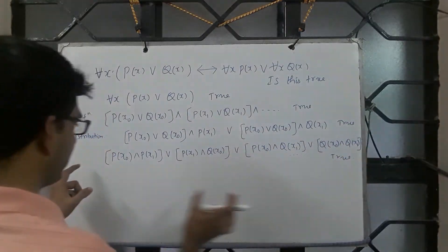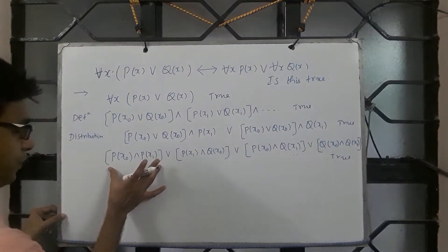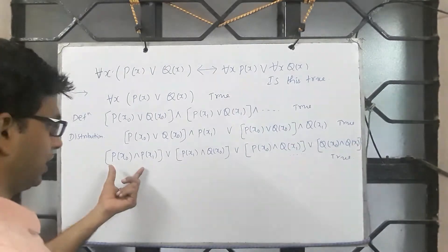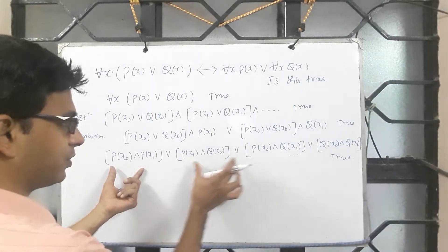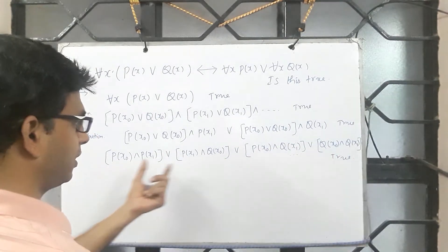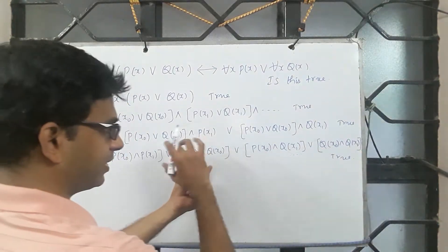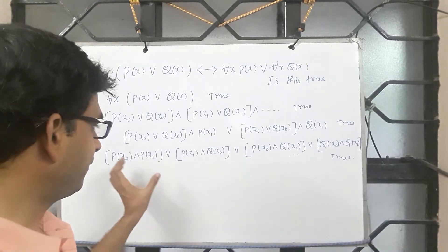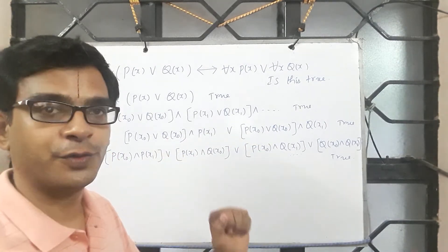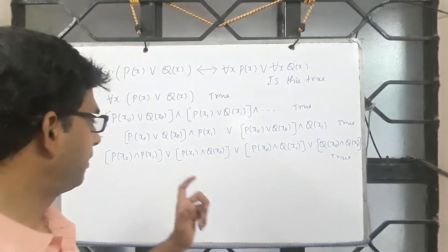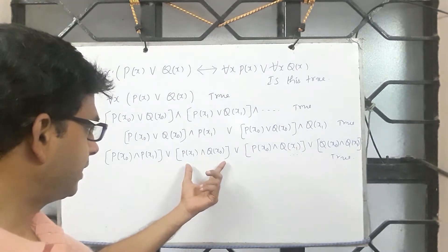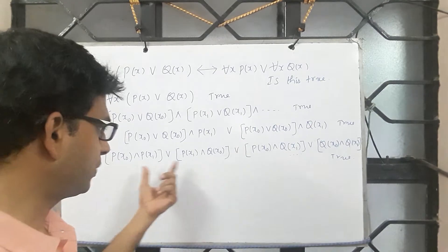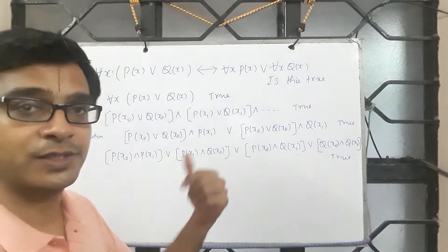This may be true because this one is true, rest of them may be false. Or this one is true, the other things may be false. So we do not know. If it is AND we can say for sure that each of them are true. But if it is OR we do not know. Probably it is true because of this. Just one expression is true because of that the entire expression is true.